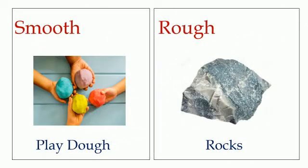Some materials are smooth, like play-doh. Others are rough, like rocks.